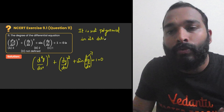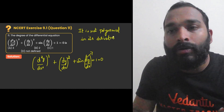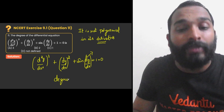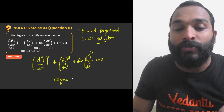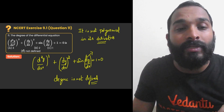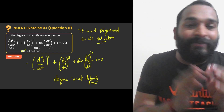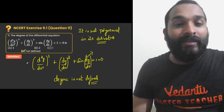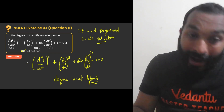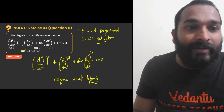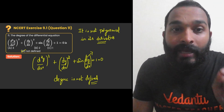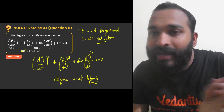Since we have sine of dy/dx, it is not a polynomial in its derivative. In that case, what do we conclude? Degree is not defined. Degree will be defined only if the given differential equation is a polynomial in its derivative. So degree is not defined — that is option D. The reason is the given differential equation is not a polynomial in its derivative due to sine of dy/dx. If it was sine y instead, the degree would be defined — specifically it would be 3, which is the power of d²y/dx², the highest derivative.